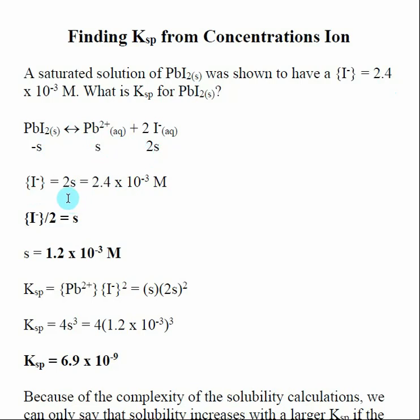So I take that concentration that I was given and realize that this is equal to 2s. I've got to take that concentration of iodine divided by 2—that will give me S. So S in this case is 1.2 × 10⁻³ M.